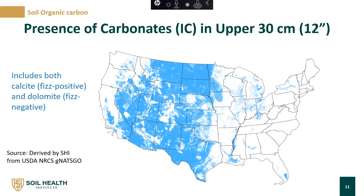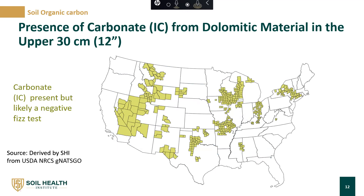This map shows the presence of all carbonates and inorganic carbon in the upper 30 centimeters of soil. Where it's shaded blue, these soils include both calcite — fizz positive soils — and dolomite — fizz negative soils. We also show just the presence of carbonate from dolomitic parent material in the upper 30 centimeters. These are soils that contain carbonate but are likely not to fizz in response to hydrochloric acid. If you are receiving samples from one of these counties, we recommend directly measuring inorganic carbon. We've created a list of these counties available in the appendix of our inorganic carbon SOP on our website.